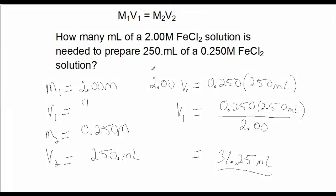I want to point out something you can use as a mental check. If you end up with a volume for V1 that is greater than 250 mL, something is a little amiss — because your proposed total volume of the diluted solution is 250 mL. If V1 comes out greater than 250 mL, something went astray, so go back and redo your calculations. You can't put more than 250 mL in a 250 mL bottle.